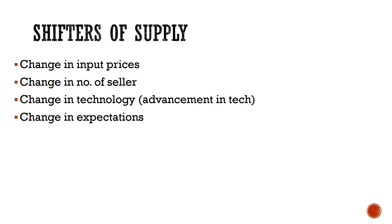Change in prices of inputs or resources. Every commodity requires several resources. For example, if you talk about burgers, you require minced meat, chicken, buns and sauces, even some labor and few machineries for the final product — that is burgers.